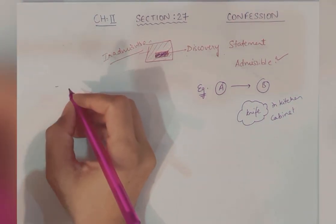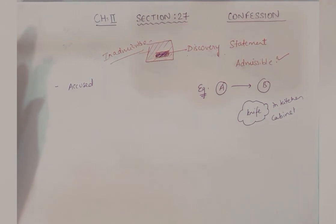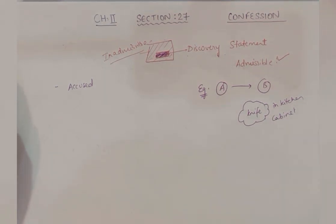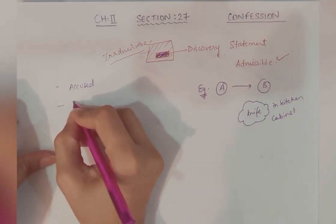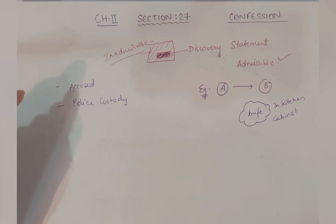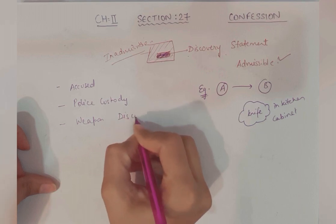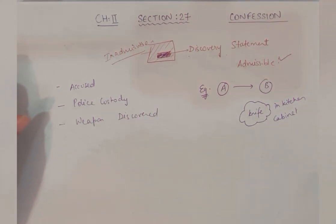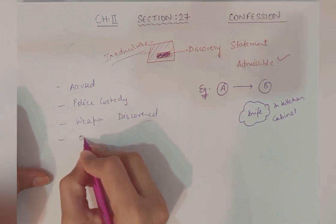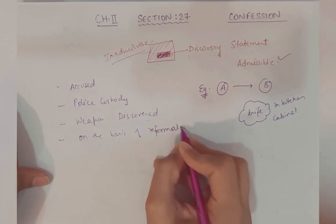Keep this in mind — the essentials: First, the person who gave the information was the accused. The discovery statement must come from the accused. Second, he was in police custody at the time of giving the information — jab bhi woh information de raha hai, woh police custody mein hai. Third, in consequence of that information, a fact — that thing, whether a weapon or a body — was discovered, discovered means actually found. Fourth, prove distinctly that the fact was discovered on the basis of information received from the accused.